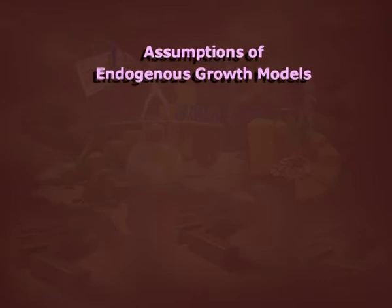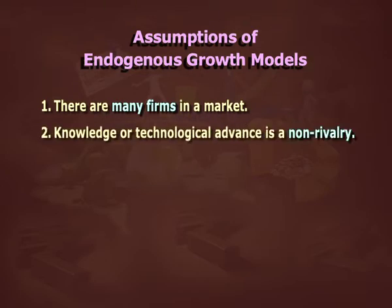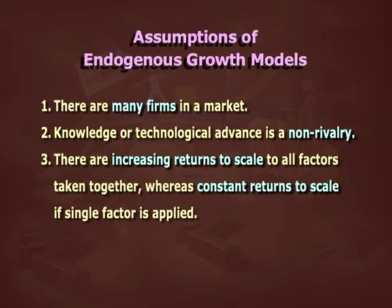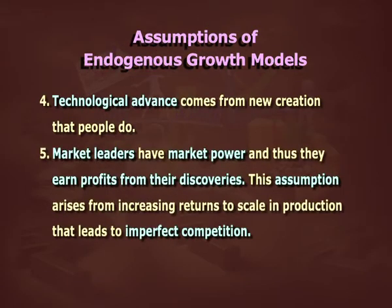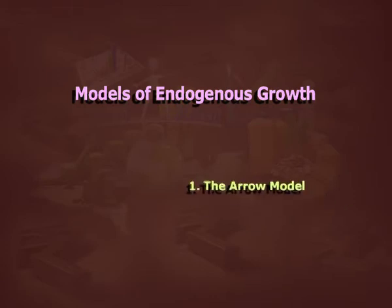The new growth theories are based on some assumptions: firstly, there are many firms in a market; secondly, knowledge or technological advance is non-rival; thirdly, there are increasing returns to scale to all factors taken together, whereas constant returns to scale if a single factor is applied; fourthly, technological advance comes from new creations that people do; fifthly, market leaders have market power and earn profits from their discoveries. These assumptions arise from increasing returns to scale in production, leading to imperfect competition — these are the requirements of an endogenous growth theory.